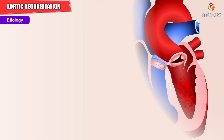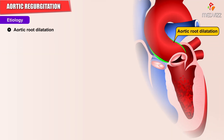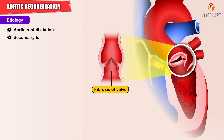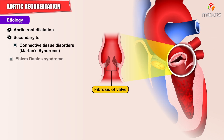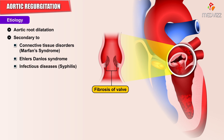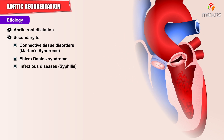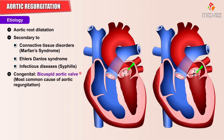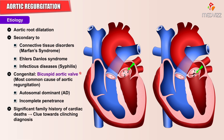Some of the most common causes of aortic regurgitation include aortic root dilation secondary to connective tissue disorders like Marfan syndrome and Ehlers-Danlos syndrome, and infectious causes like syphilis. Congenital bicuspid aortic valve is a very common cause of aortic regurgitation. Bicuspid aortic valve is an autosomal dominant condition with incomplete penetrance.